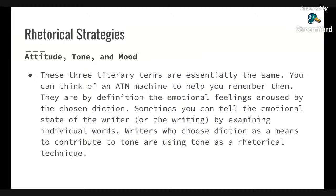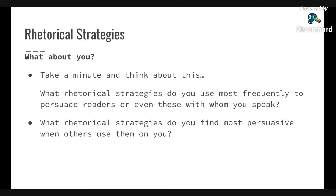Attitude, tone, and mood — these three literary terms are essentially the same thing. You can think of ATM to help you remember them. By definition, they are the emotional feelings that come from a chosen diction. Sometimes you can tell the emotional state of the writer or the writing by examining the individual words the writer uses. Writers who choose diction as a means to contribute to tone are using tone as a rhetorical technique. Attitude, tone, and mood can also be conveyed through the words chosen, not necessarily by hearing them.